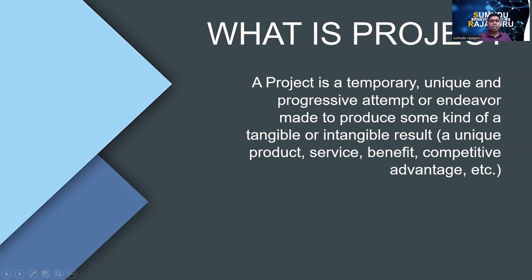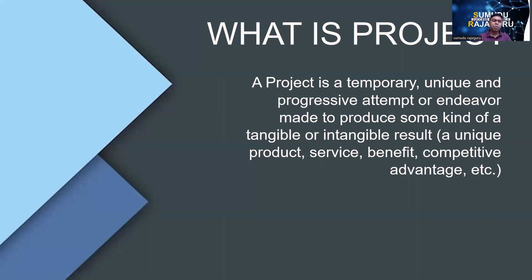A project is also progressive because we have a defined timeframe in which to complete it. So again, a project is a temporary, unique, and progressive attempt. When we consider results, a project can produce two types: tangible and intangible. Any attempt that is temporary, unique, and progressive to create tangible or intangible results is called a project.